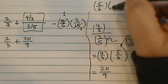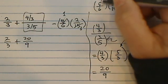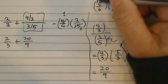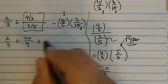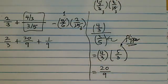5 over 6 times 2 over 15. So there's a common factor of 5 here. So 1 and 3 left. There's 1 left and there's 3. So the answer is 1 over 9. Okay, so far so good.